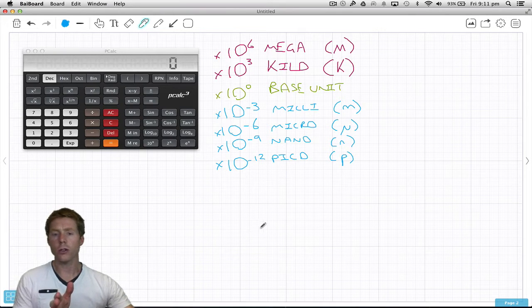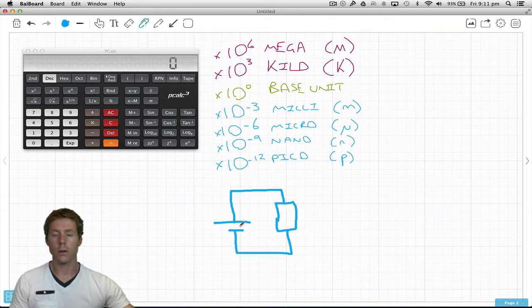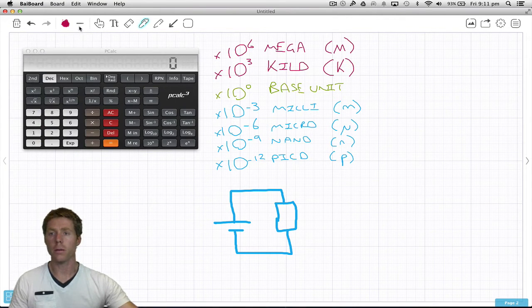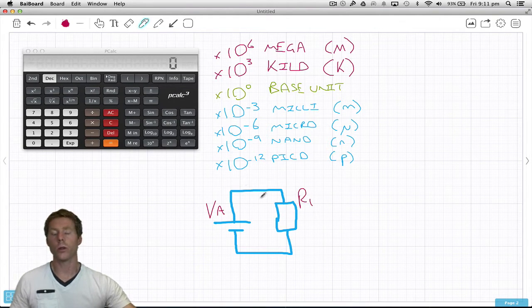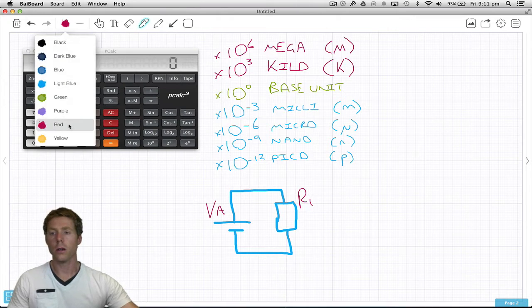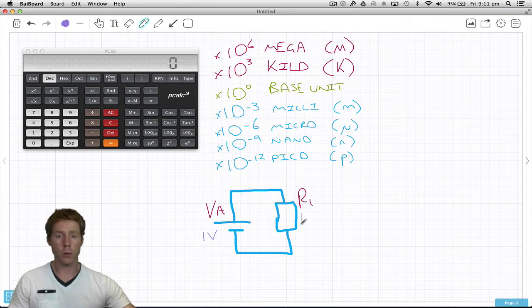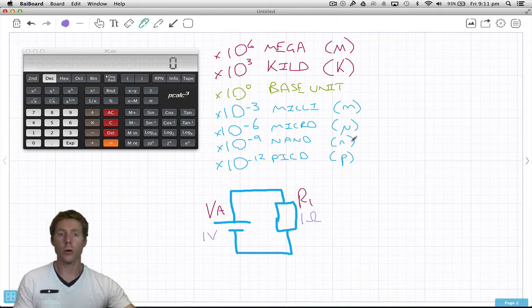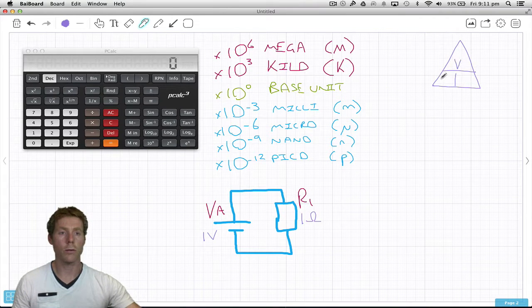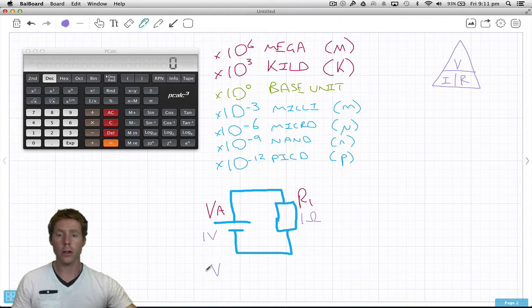If you remember from the last tutorial, we had an electronic circuit. We had the voltage applied from the power supply and then the resistance in the circuit, R1. We had 1 volt applied voltage and 1 ohm of resistance. To get current using our Ohm's law triangle, current equals voltage divided by resistance.